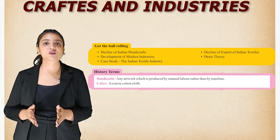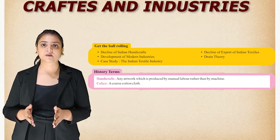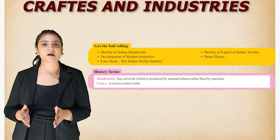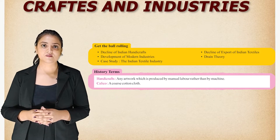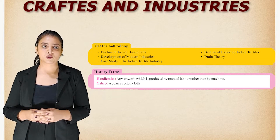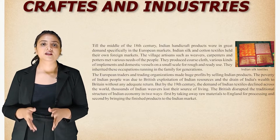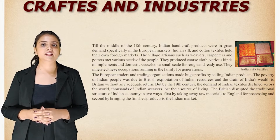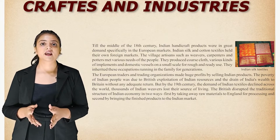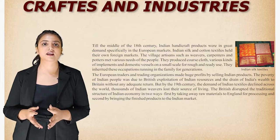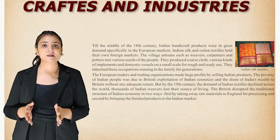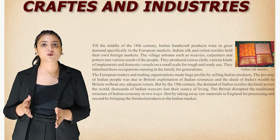Now let's familiarize ourselves with some history terms. First is 'handicrafts' — any artwork which is produced by manual labor rather than by machine is known as handicrafts. 'Calico' — a coarse cotton cloth — is known as calico. Till the middle of the 18th century, Indian handicraft products were in great demand.